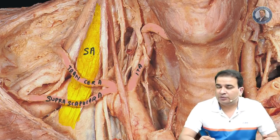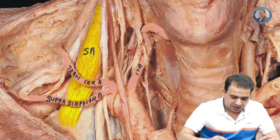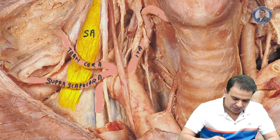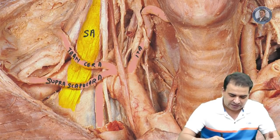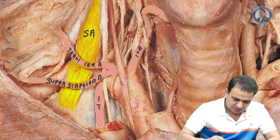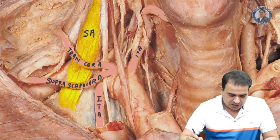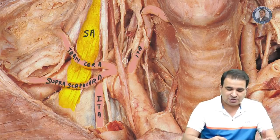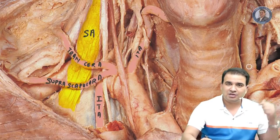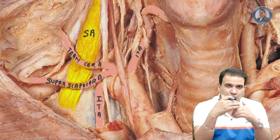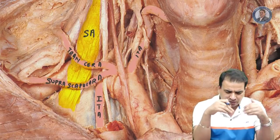Apart from the vertebral artery and thyrocervical trunk, the first part of the subclavian artery also gives off the internal thoracic artery — also called the internal mammary artery — which is a major arterial supply to the mammary gland. It arises just opposite to the thyrocervical trunk and goes into the thoracic wall.